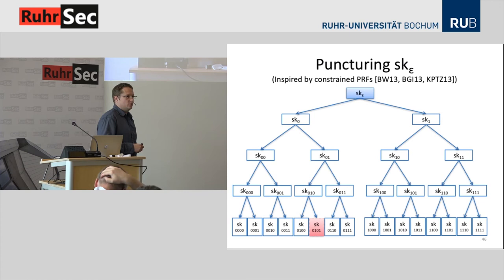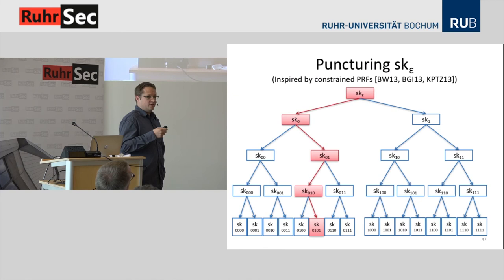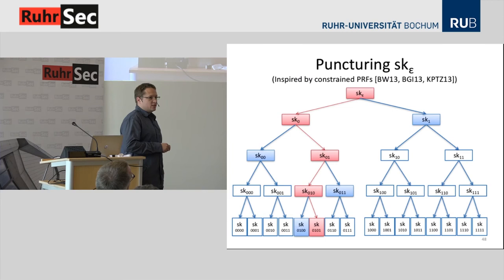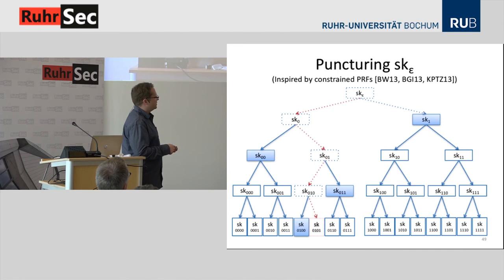What happens when we want to puncture the secret key at one position? Suppose we have received ciphertext 0101 and want to remove decryption capability for this particular ciphertext. We start from the master secret key SK_ε, compute all secret keys on the path from the root down to the leaf 0101, then compute all siblings of nodes on this path — these are the blue nodes. Finally, we remove all the red nodes. What remains is a new secret key consisting of all the blue nodes, which allows deriving all secret keys except for the one corresponding to ciphertext 0101 — decryption capability for exactly that one ciphertext has been punctured out.